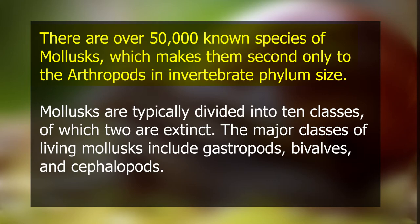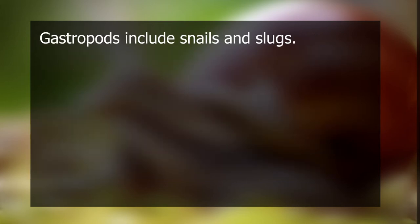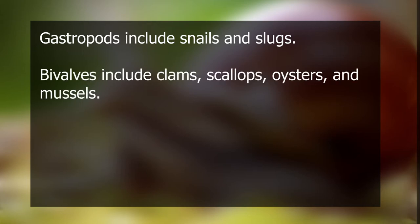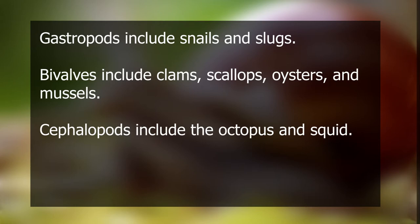There are over 50,000 known species of Mollusks, and that only makes them second to the arthropods in invertebrate phylum size. Mollusks are typically divided into 10 classes, of which two are extinct. The major classes of living Mollusks include gastropods, bivalves, and cephalopods. Gastropods include snails and slugs. Bivalves include clams, oysters, and mussels. Cephalopods include the octopus and the squid.